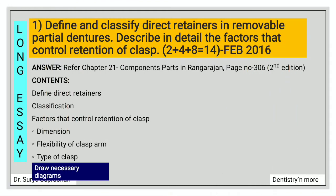First question is: define and classify direct retainers in RPD. Describe in detail the factors that control retention of clasp. For this you have to refer chapter 21, component parts, page number 306. First define what is direct retainer and then classify the direct retainers, i.e. extracoronal and intracoronal. Then write about a further classification: intracoronal can be further divided into intracoronal attachments, and extracoronal can be further classified into prefabricated attachments and clasp.